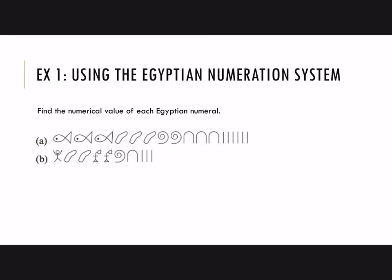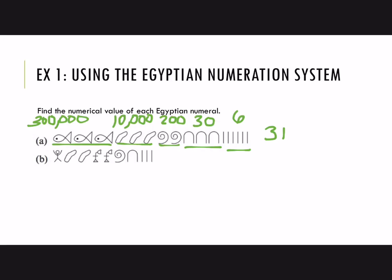Find the numerical value of each Egyptian numeral. In part A, count up how many symbols and the value of each one. First we have three fish, which each represent 100,000, so that's 300,000. Then three pointing fingers, each representing 10,000. Two scrolls, each representing 100. Three heel bones, which represent 10 each, so that's 30. And finally six vertical staffs, which each represent 1, so that's 6. Combining all of that: 300,000 plus 30,000 plus 200 plus 30 plus 6 = 330,236.